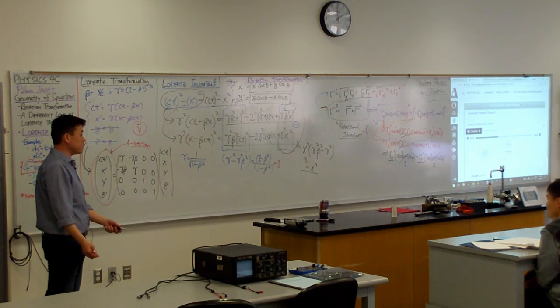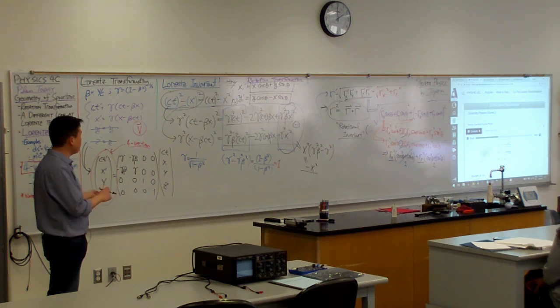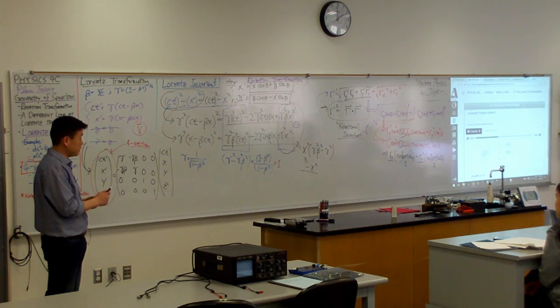There's no four vector version of velocity. Or, I mean, you can define one, but it's intuitively very different from velocity, different enough that people hardly ever use it.